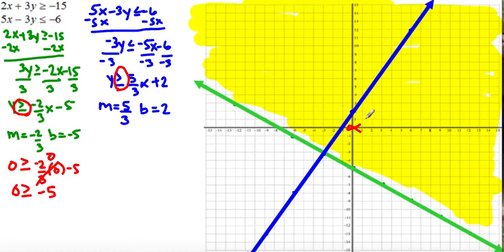I have to figure out which side to shade - the right side with (0, 0) or the left side. I plug in (0, 0) into the inequality: 0 is greater than or equal to 5/3 times 0 plus 2, which is 2. Since 0 is not greater than or equal to 2, I can't shade the right side of the blue line, so I shade the left side.